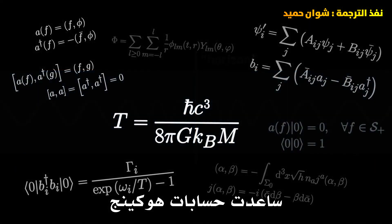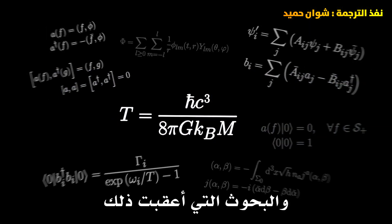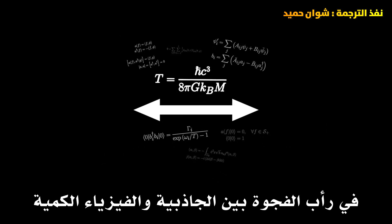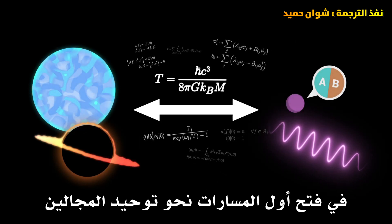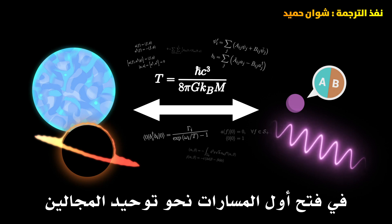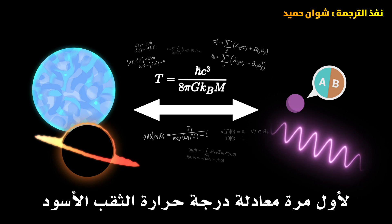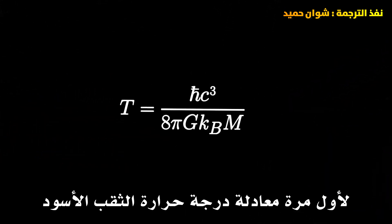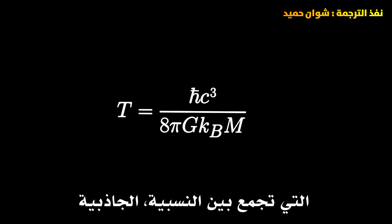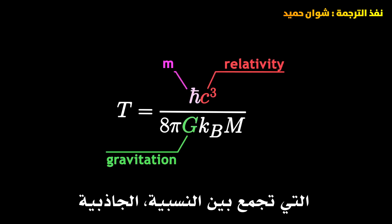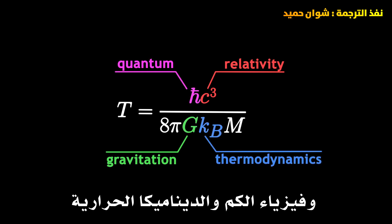Hawking's calculations and the research that followed helped bridge the gap between gravitation and quantum physics, opening the first paths towards a unification of the two realms. For the first time, a formula — that of the temperature of a black hole — involved all the constants of modern physics, bringing together relativity, gravitation, quantum physics, and thermodynamics.